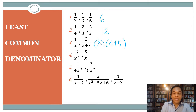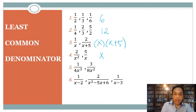For number four, we have x squared and x. For this case, we choose the variable with the highest degree as our LCD, so we have x squared as our LCD.